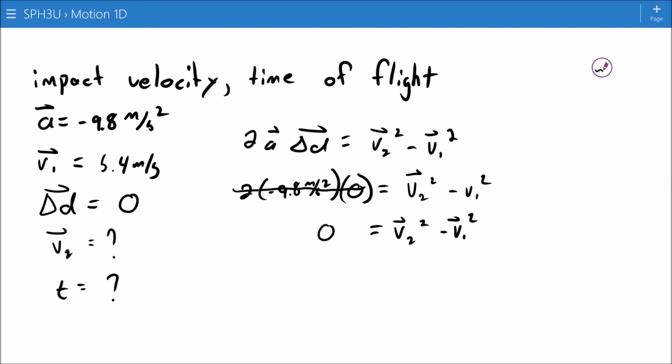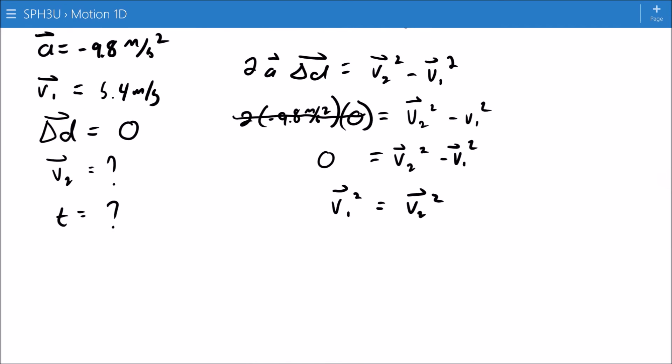So if I move my V1 over to the other side of the equation, I can see that V1 squared equals V2 squared. Now, this is interesting. All that really matters here is that I've put my displacement as zero. So what I'm saying here is that if my object returns to the same height, then my initial velocity and my final velocity are the same. Well, that's not quite true. It's close.